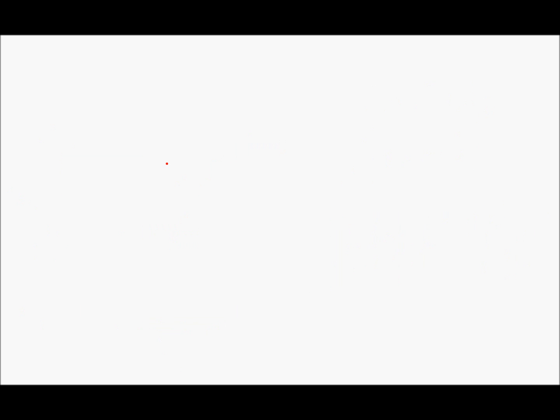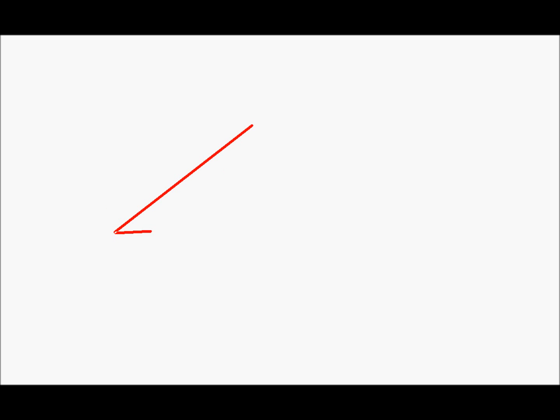Next we will see rotation. Before we see rotation, we will see a basic concept of trigonometry. Let's say this is a right angle triangle. Let this angle be phi and this angle is 90 degrees. The side opposite to the right angle is the hypotenuse; let its length be r.